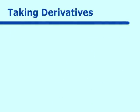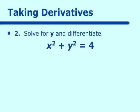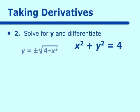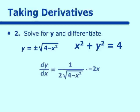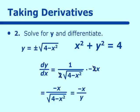Now let's show how to do it by solving for y. If we solve for y, we have two cases: y equals plus or minus the square root of 4 minus x squared. We take these derivatives separately. Using chain rule, the first dy/dx is one-half times the square root of 4 minus x squared in the denominator, times the derivative of 4 minus x squared, which is negative 2x. That reduces to negative x over the square root of 4 minus x squared, which equals negative x over y — the same result as implicit differentiation.